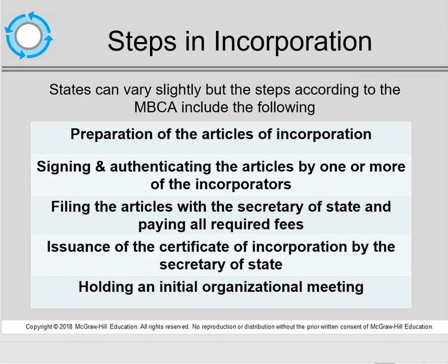What are the steps in incorporation under the MBCA? The first thing to do is to prepare the Articles of Incorporation, otherwise known as the Charter. Once that's done, one of the incorporators must sign the articles. Then the articles must be filed with the applicable Secretary of State and any fees must be paid. Once that's done, the Secretary of State will issue a Certificate of Incorporation, and then you hold the first organizational meeting of the corporation.